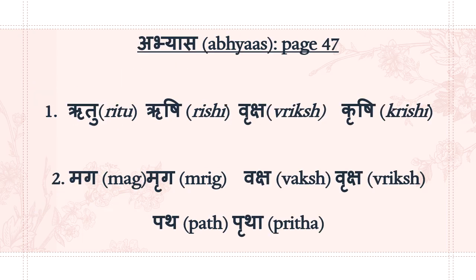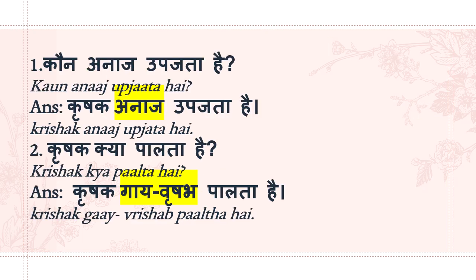On page 47 of your textbook you can find Abhyas, meaning exercises. First is bol kar likho — speak and write: Ritu, Rishi, Vriksha, Krishi. Second is sun kar samjho — listen and understand. Mag becomes Mrig when you add the Ri Matra. Vaksha becomes Vriksha. Pat becomes Priya.